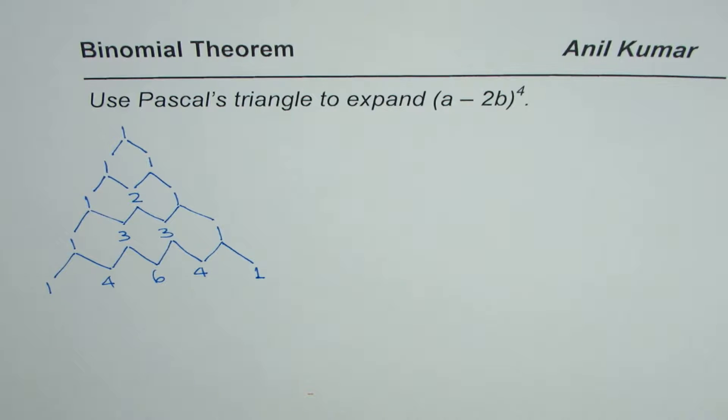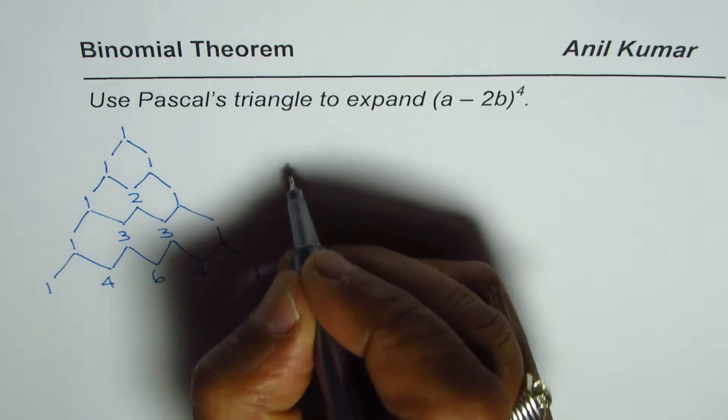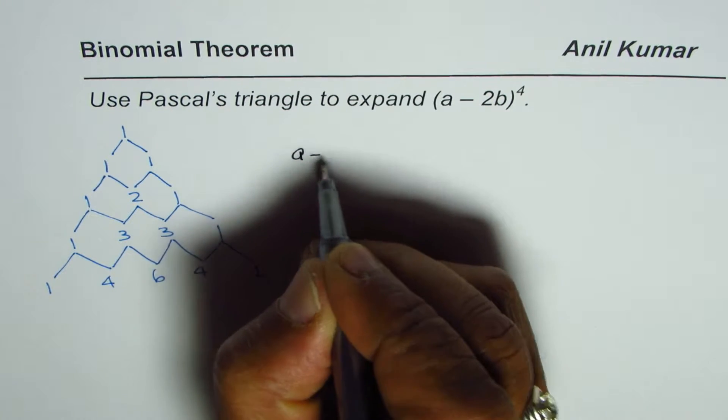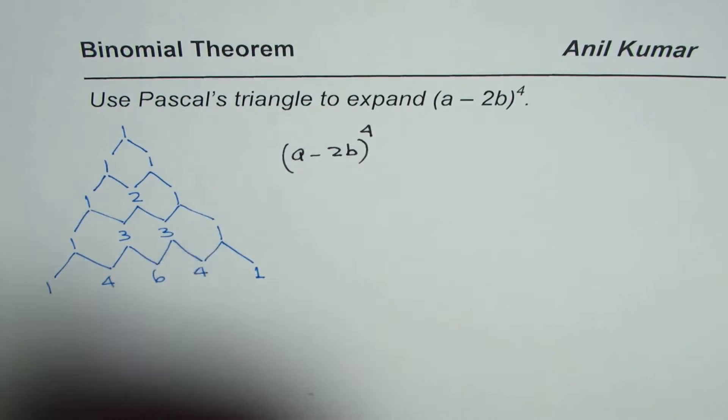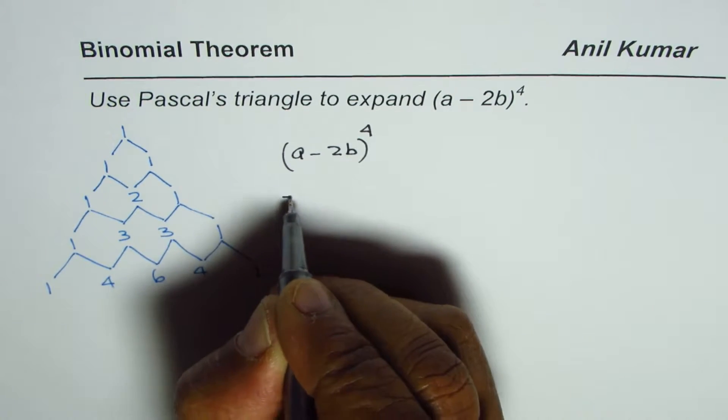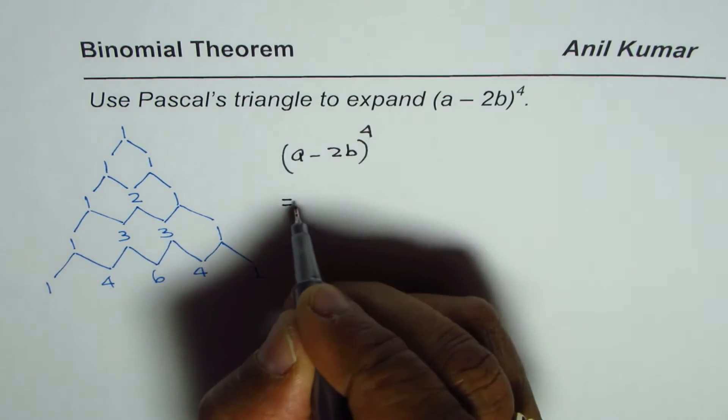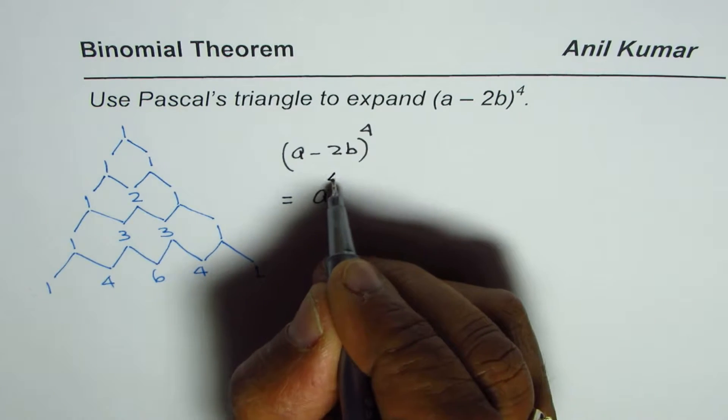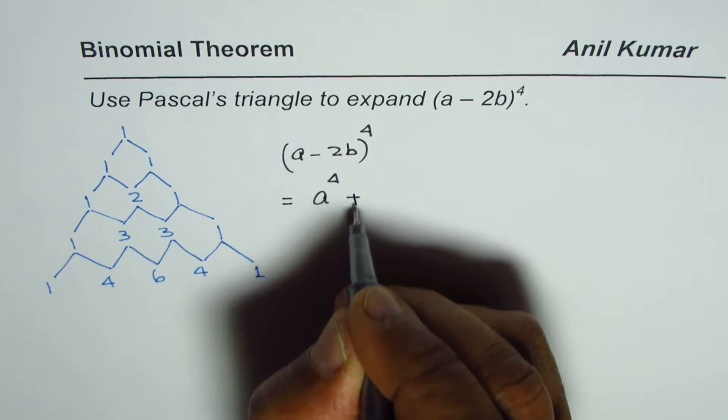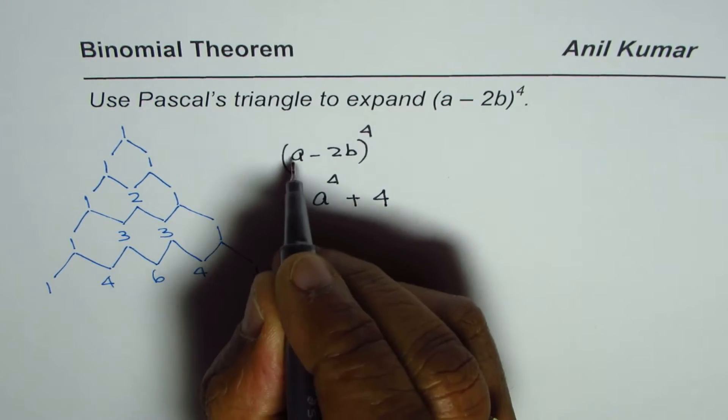coefficients. Let us use these coefficients to expand (a - 2b)^4. When we expand, we write: first coefficient is 1, so a^4. Plus, the second coefficient is 4, so 4a^3. The power of a decreases by 1, and the power of the next term will be 1, so